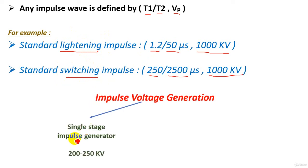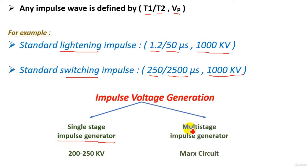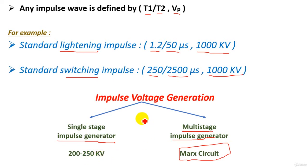Impulse voltage can be generated by two methods. The first is the single-stage impulse generator, which can produce voltages between 200 and 250 kilovolts. For higher voltages, we use the multi-stage impulse generator, also called the Marx circuit, which can produce voltages higher than 250 kilovolts. In the next two lectures, we will cover both methods for producing impulse high voltage.